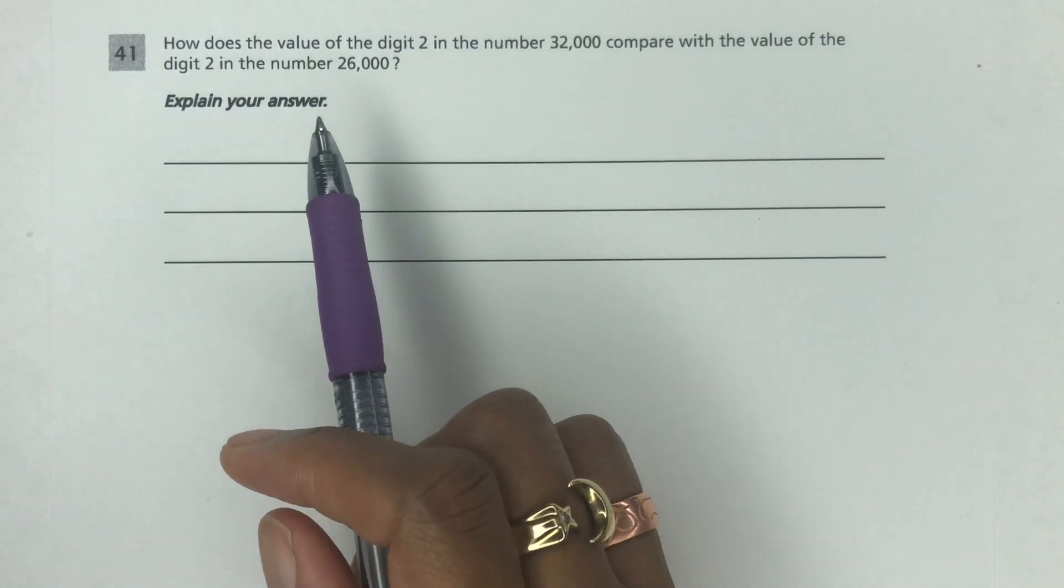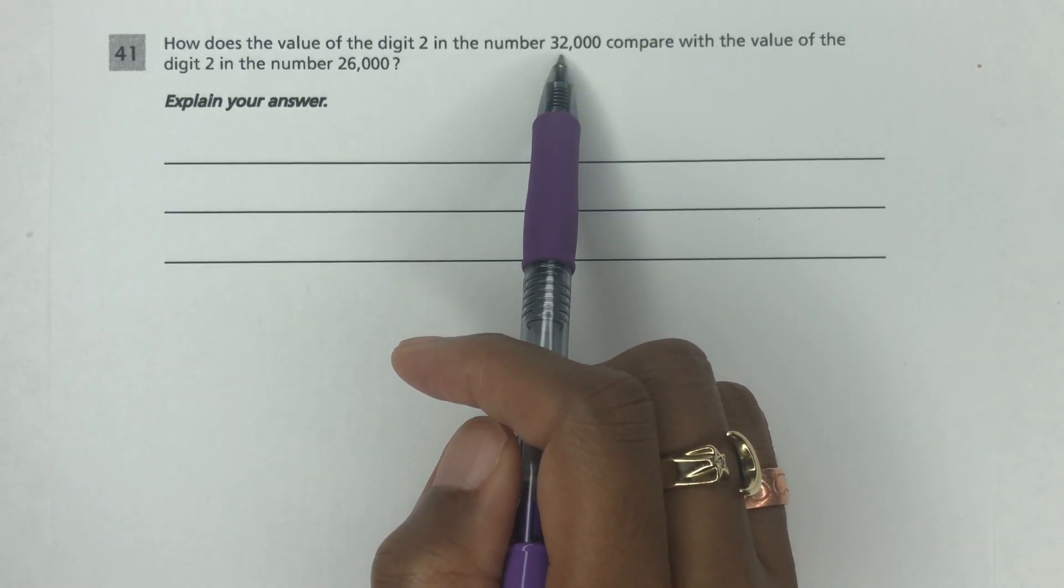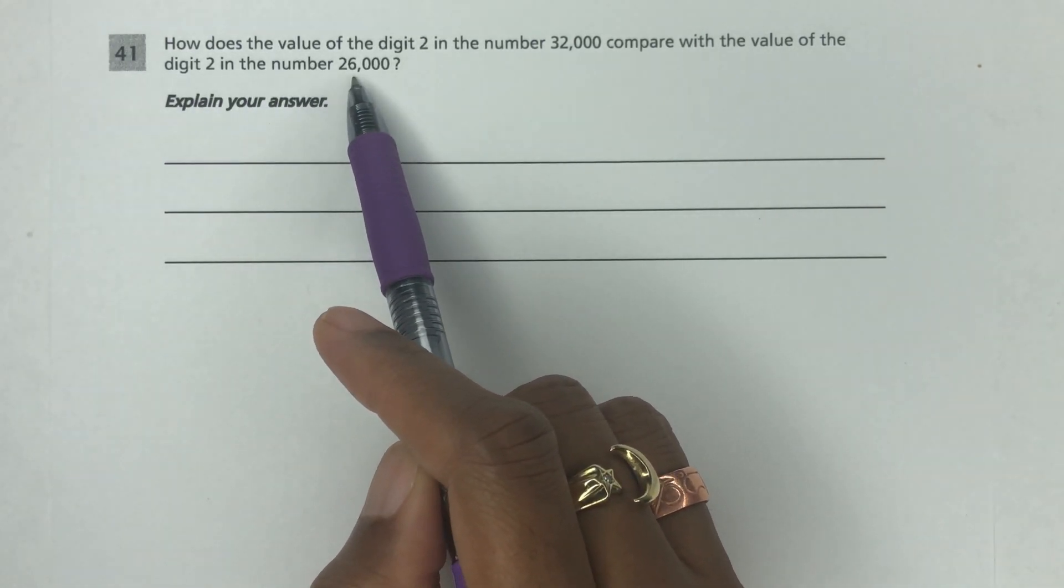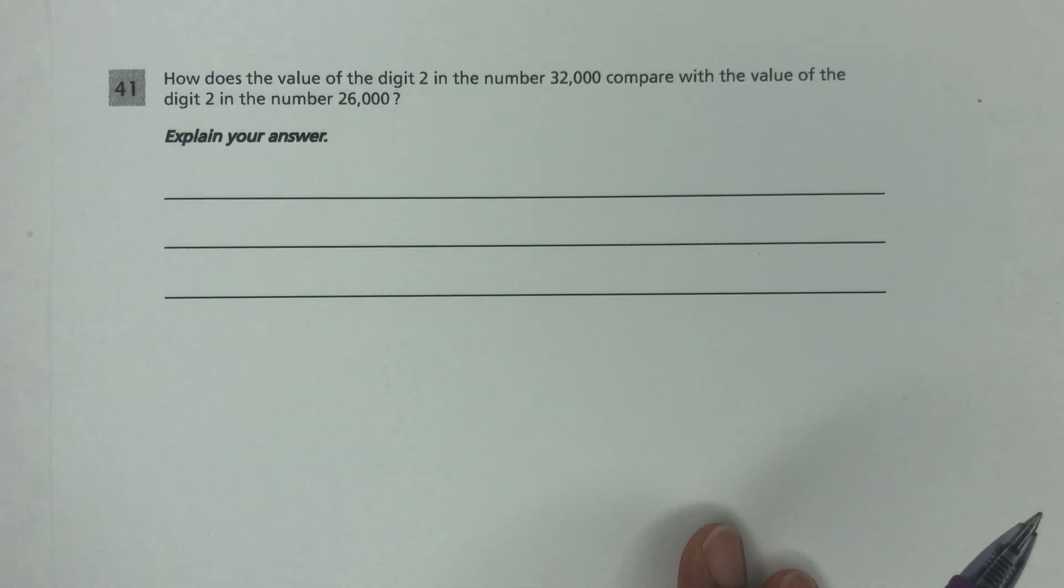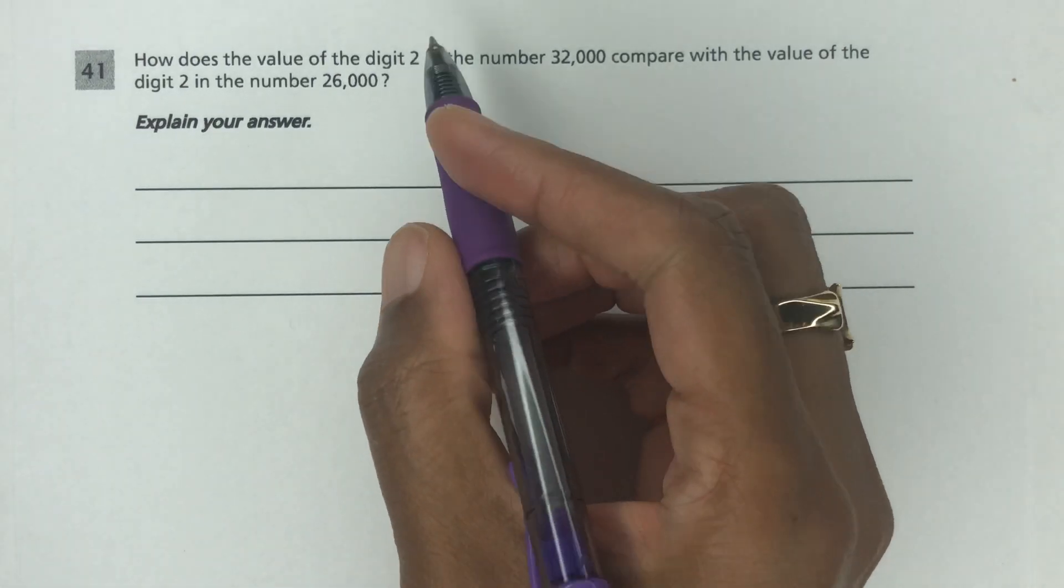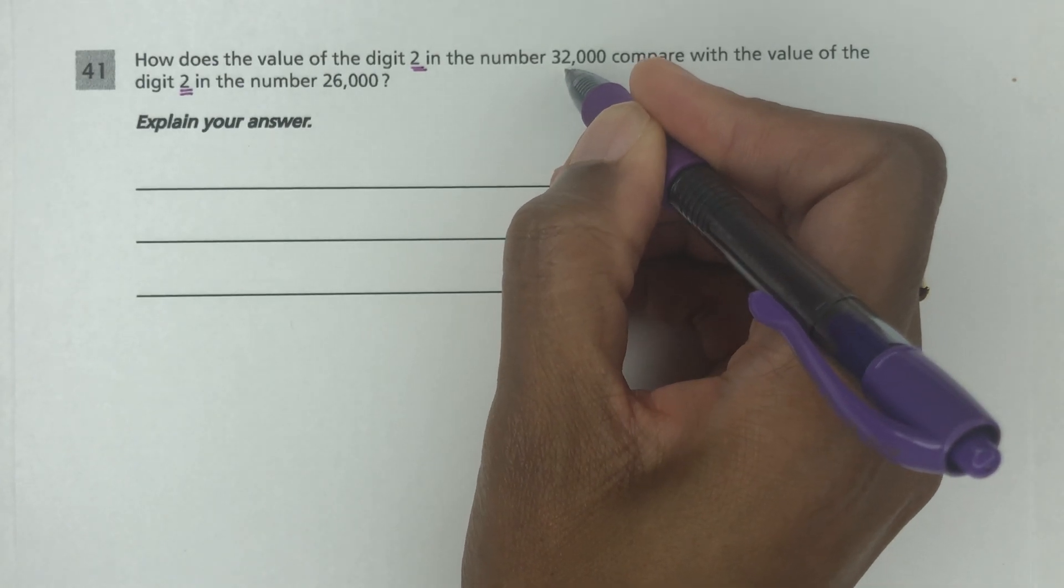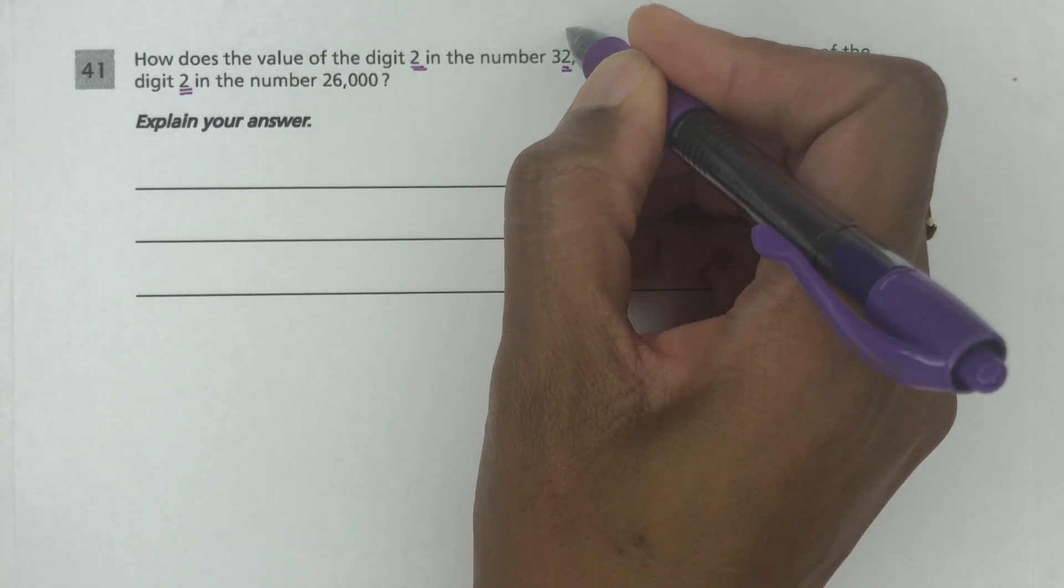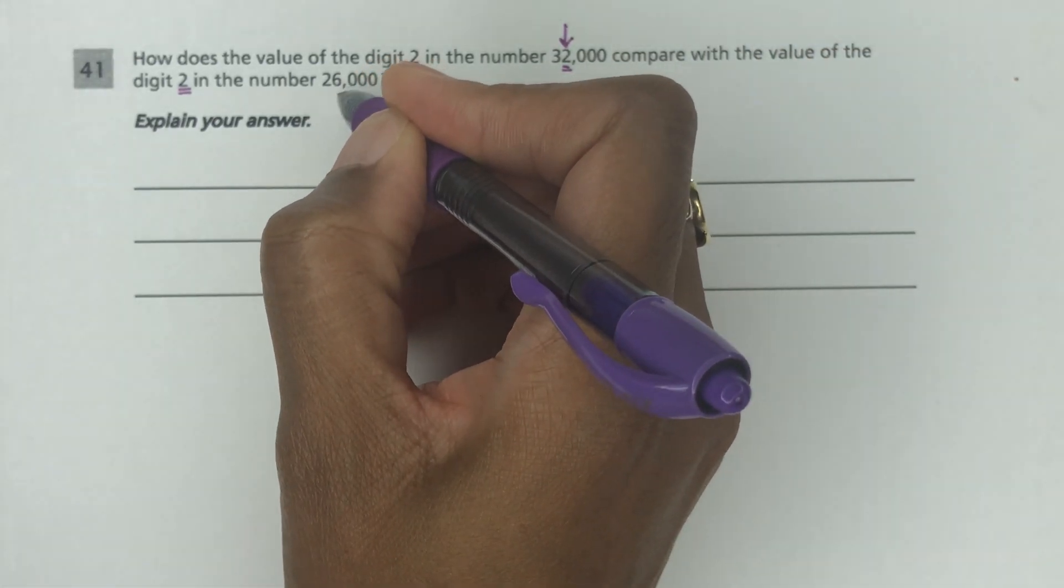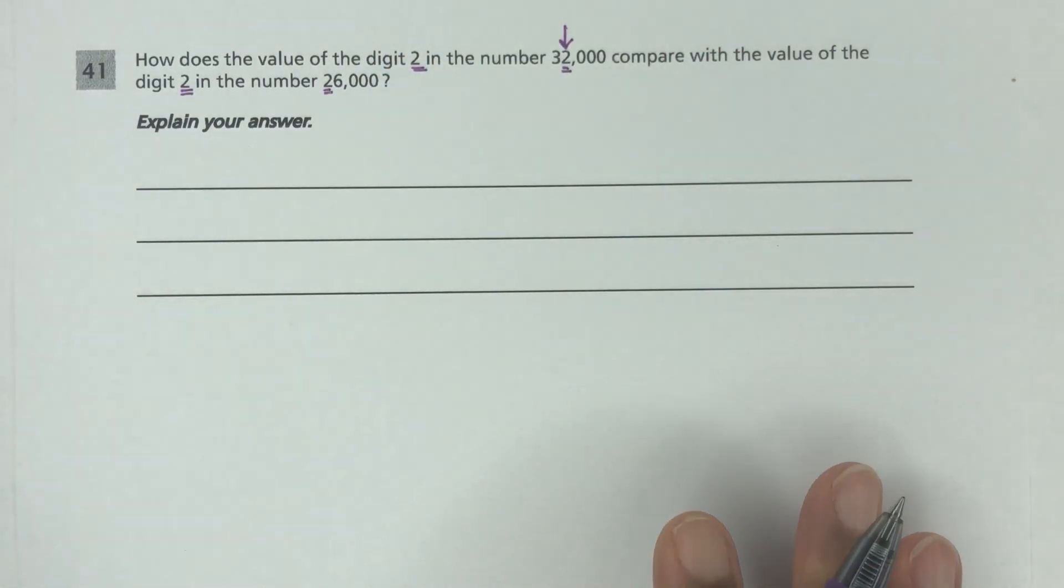Let's have a read. How does the value of the digit 2 in the number 32,000 compare with the value of the digit 2 in the number 26,000? What do we do here? We have the digit 2 in both cases. The digit in 32,000 is in the thousands place, and the digit 2 in 26,000 is in the ten thousands place.